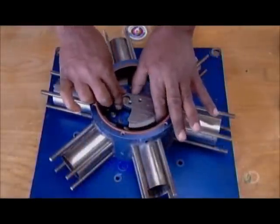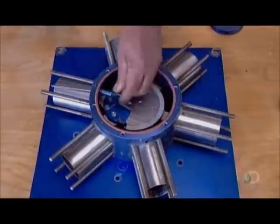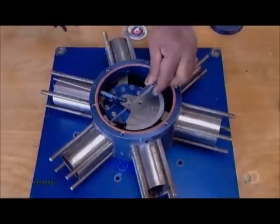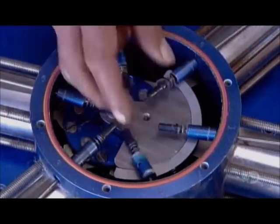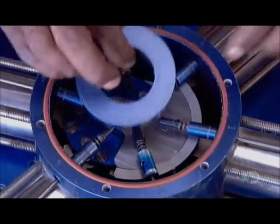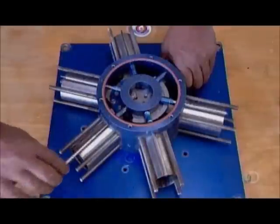They place a counterbalance over the spider bearing to further smooth the motion of the crankshaft. They install a pushrod over each cylinder. It operates a valve, which lets steam enter the cylinder and move the piston. They insert the base of each pushrod into a guide ring.